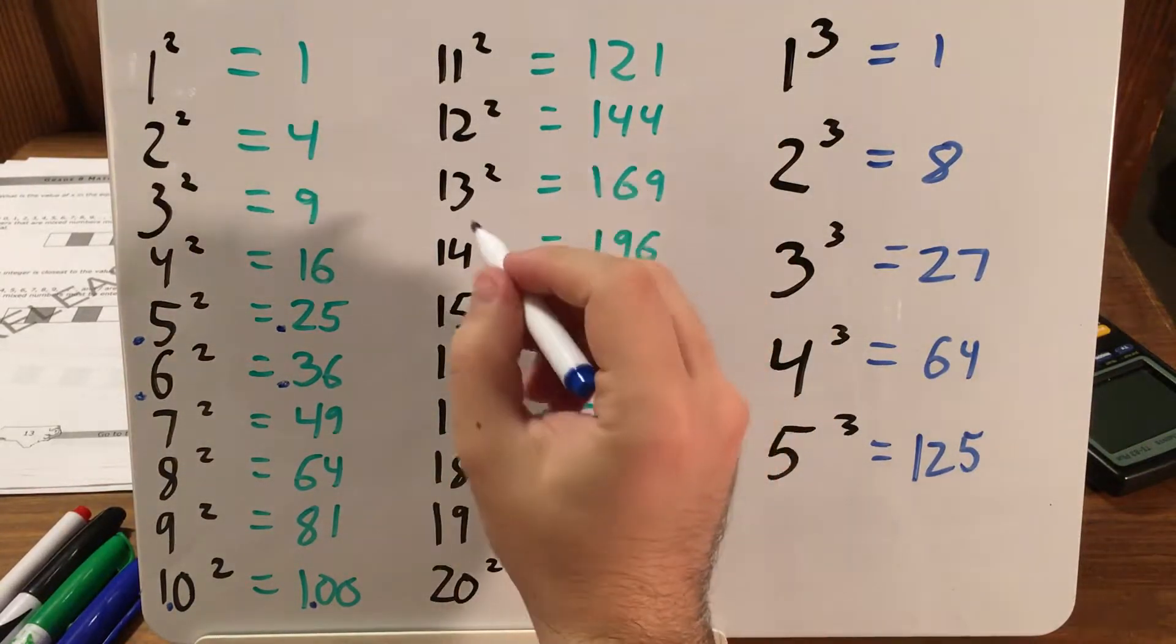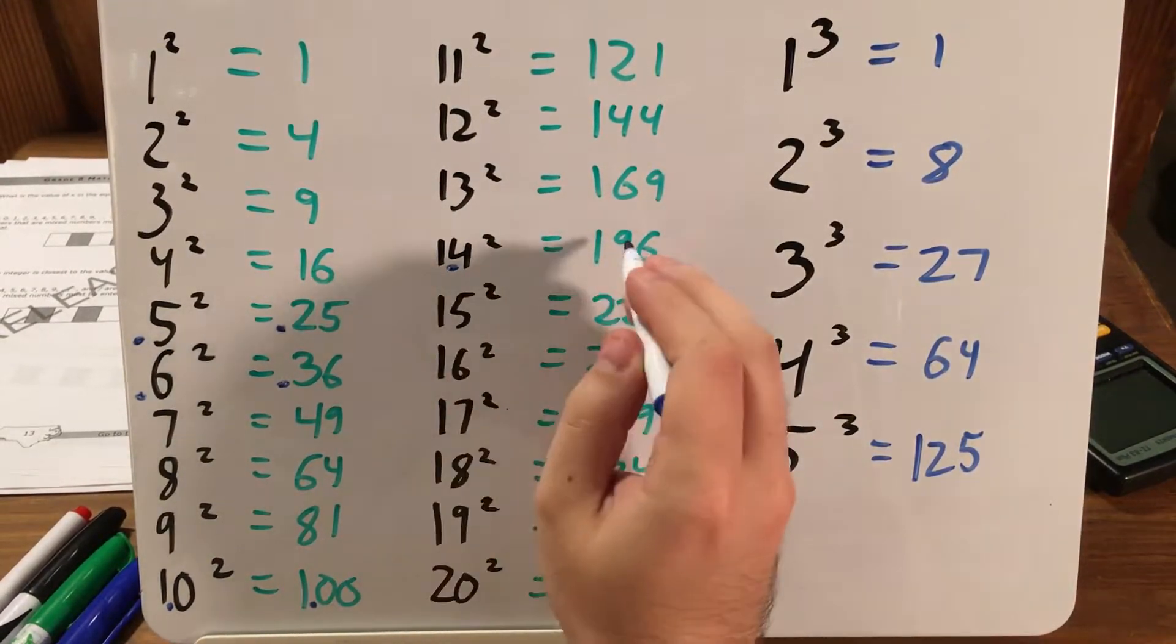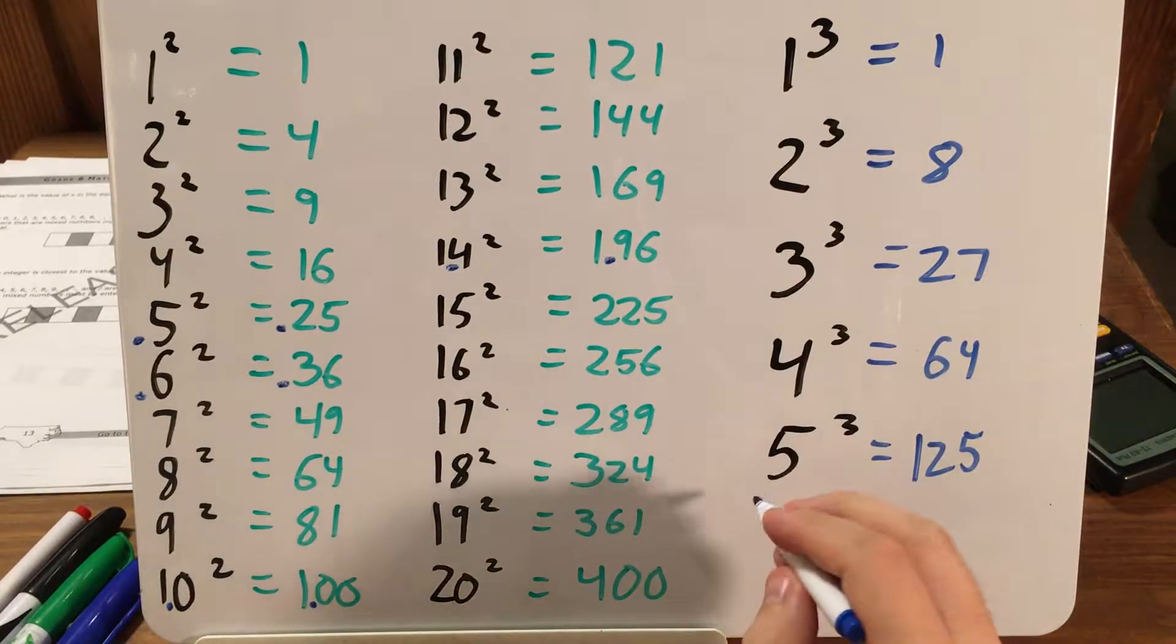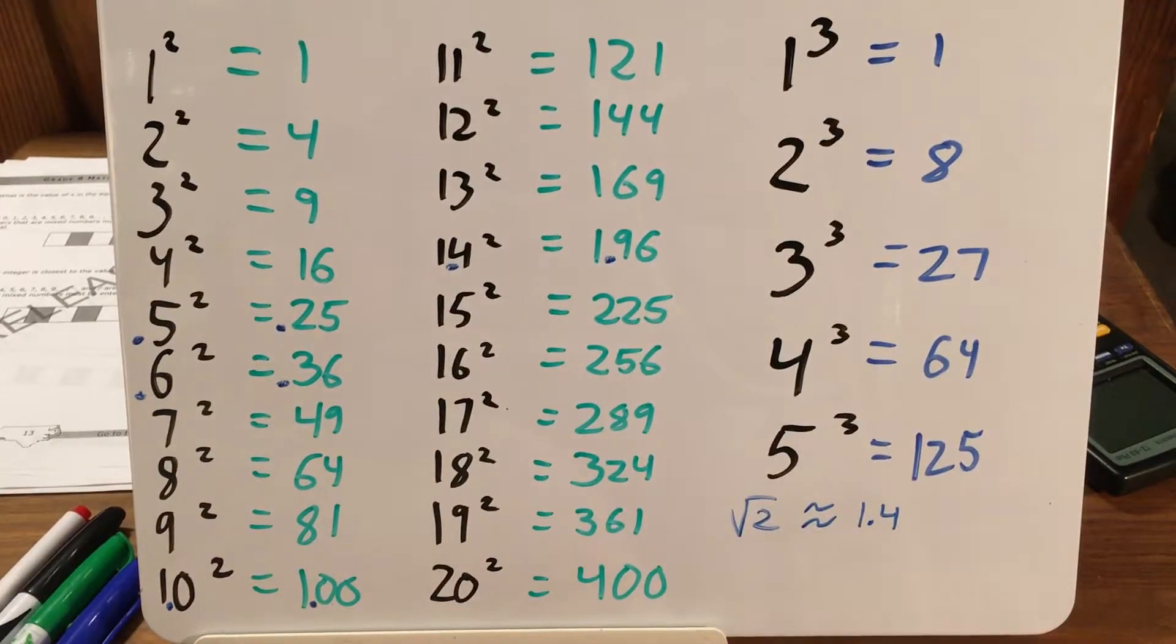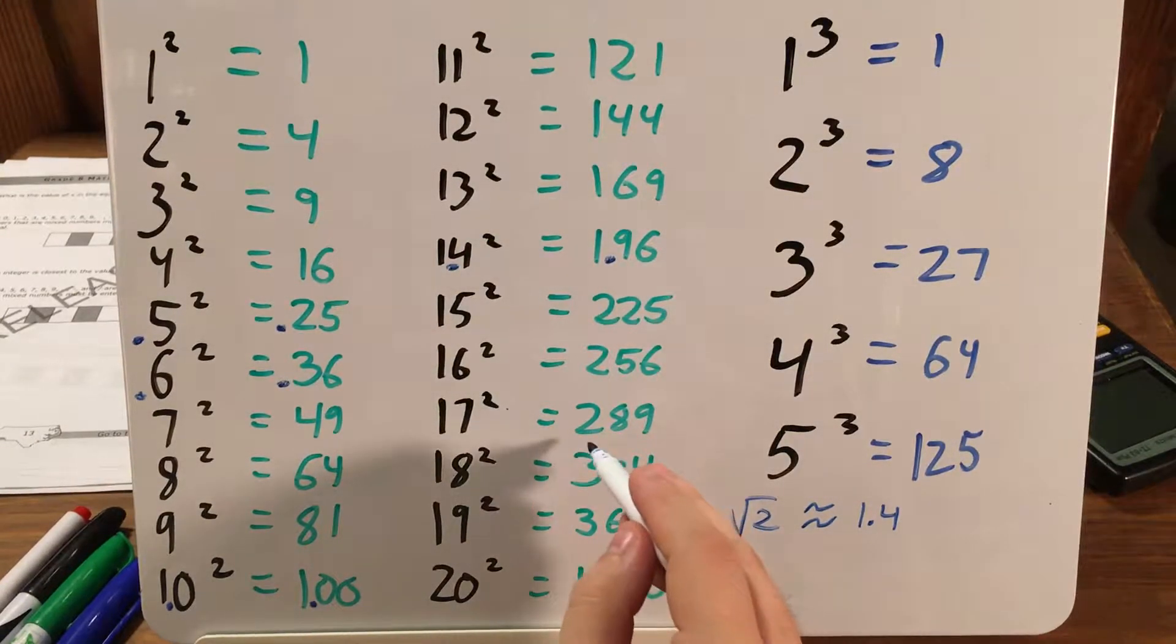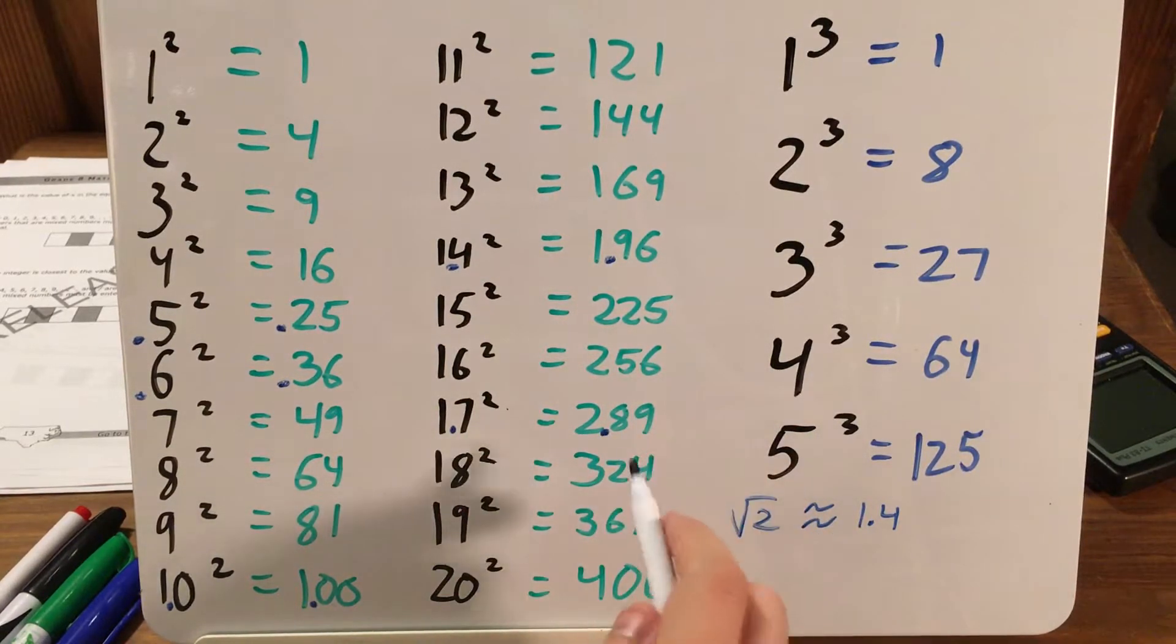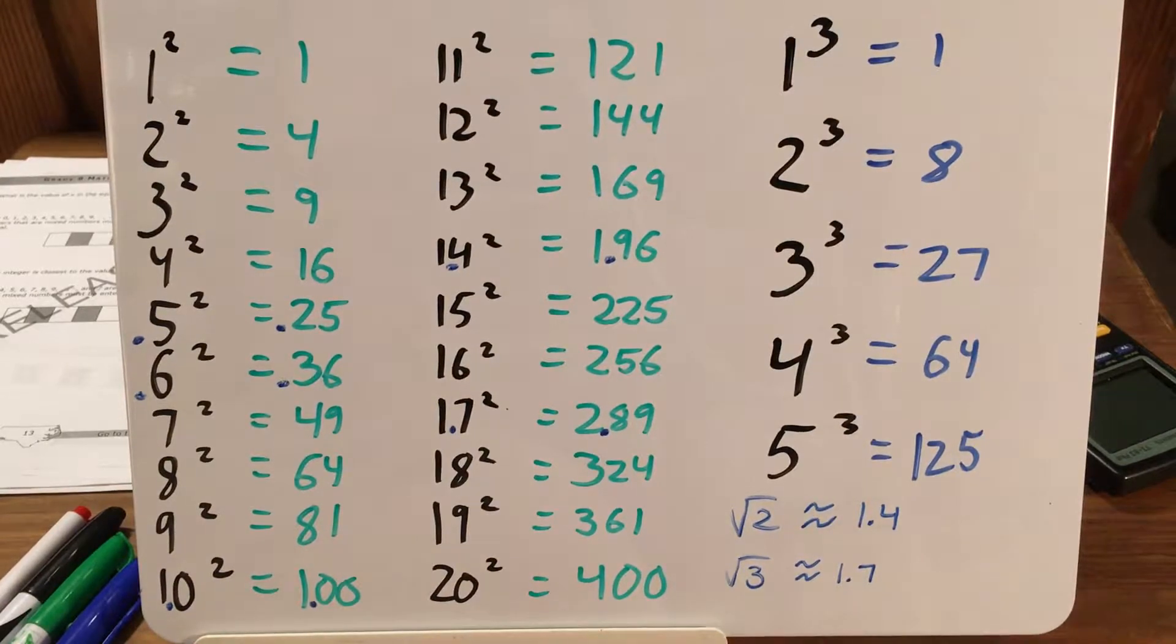Now I'm going to come over here to 14 squared equals 196. I'm going to call this 1 and 4 tenths and say that this equals 1 and 96 hundredths. Which means if I'm looking for the square root of 2, then that is going to be about 1.4 or 1 and 4 tenths. Similarly, I'm going to go down to this 289 equals 17 squared. And I'm going to say this is 1 and 7 tenths and this is 2 and 89 hundredths. This is the closest we would get to 300 or just 3. So the square root of 3 is going to be about 1.7 or 1 and 7 tenths.